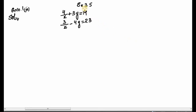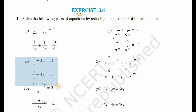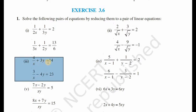This is Exercise 3.5, Question Number 1, Part 3, Chapter: Pair of Linear Equations in Two Variables, NCERT Class 10. This exercise is also listed as Exercise 3.6 in the state board. The question we will solve today is: 4/x + 3y = 14 and 3/x - 4y = 23.